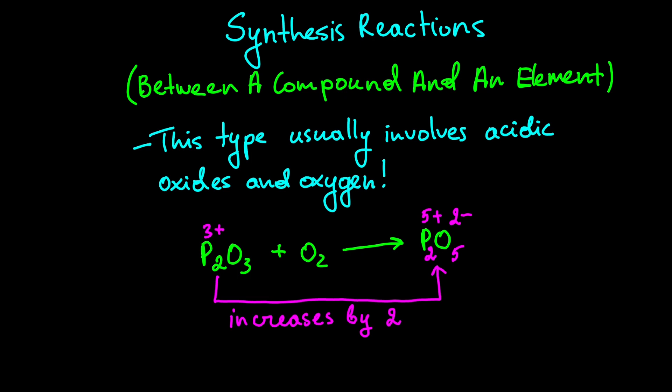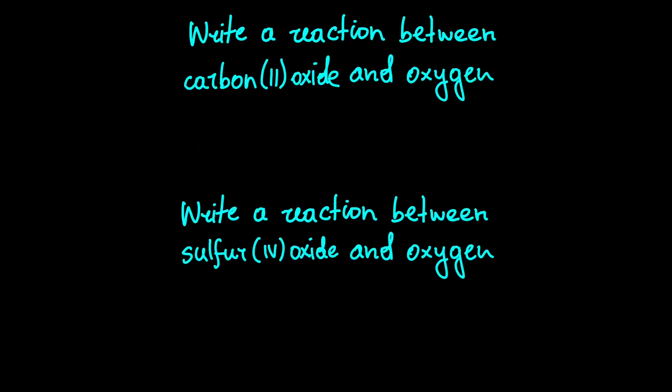Let's look at more examples. In this case, carbon two oxide reacts with oxygen. The carbon charge is two plus, so after the reaction it should be four plus. We get C four plus and O two minus. The chemical formula we get is CO2. To balance the equation we add the coefficient two in front of CO and CO2. Now we have a reaction between sulfur four oxide and oxygen.